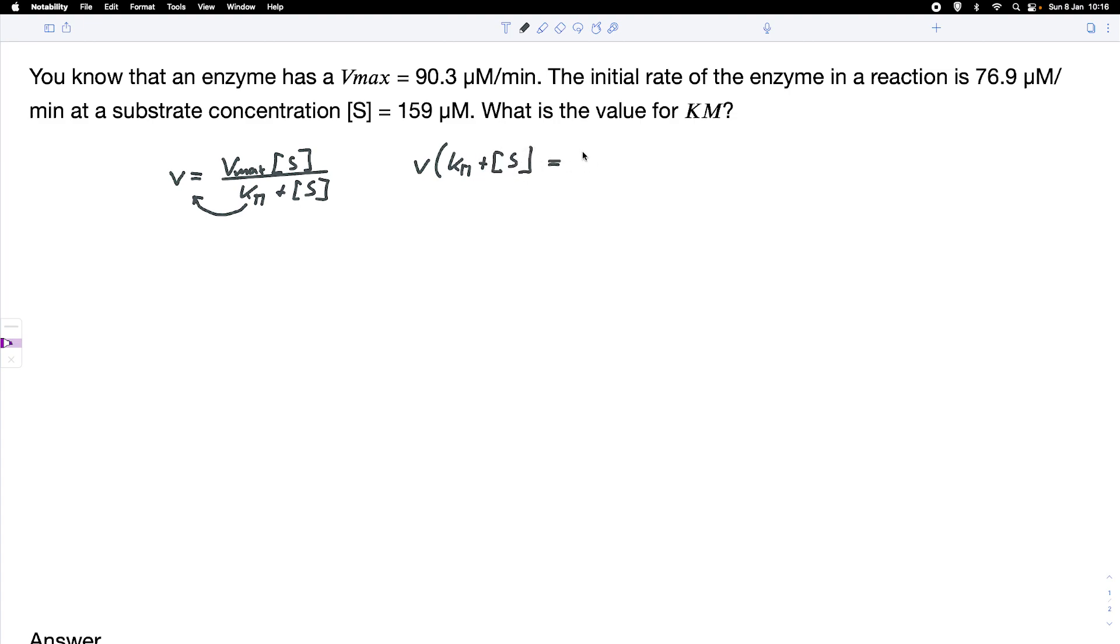And now we multiply the initial rate into the bracket and we get V times Km plus V times S equals Vmax times S.